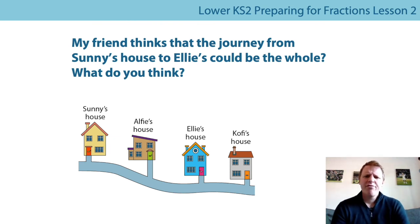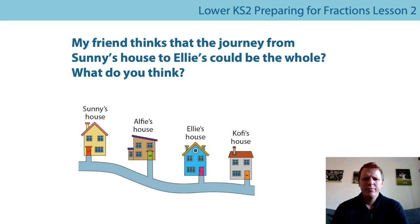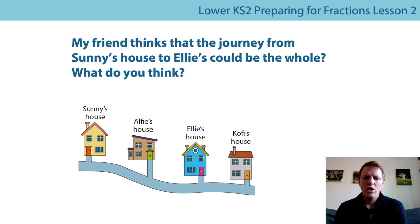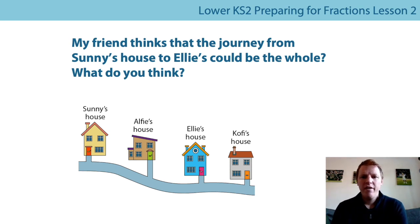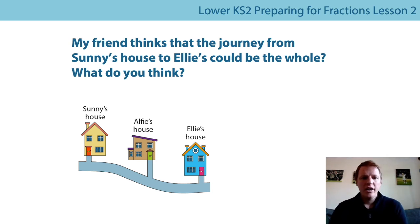My friend thinks that the journey from Sonny's house to Ellie's house could be the whole. On my picture it shows Sonny's house going all the way to Kofi's house — so could this be the whole? I've drawn a whole map that includes those four children's houses, but if I cover up Kofi's house, now I can see that in this example, Sonny's house to Ellie's house could be the whole.